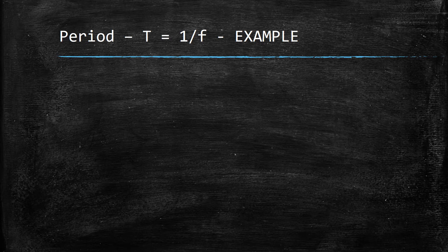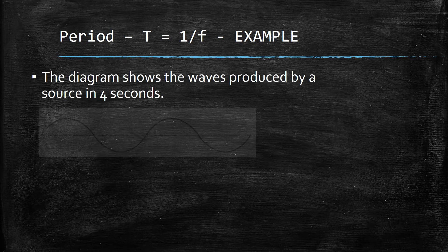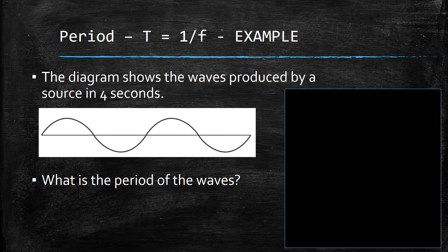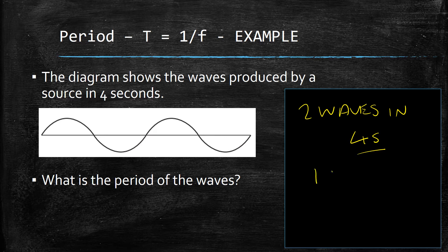Example. The diagram shows the waves produced by a source in four seconds. What is the period of the waves? Remember our definition: period is the time taken for one complete wave. Here we have two waves in four seconds, so that means we have one wave in two seconds. Two seconds is our period.